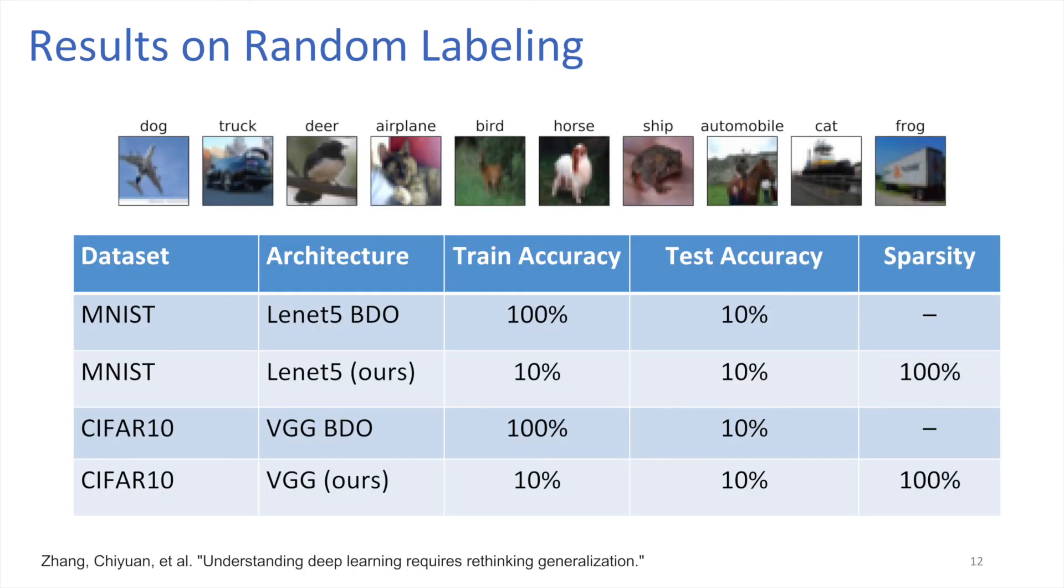Finally, we've conducted the experiment with random label data. Conventional regularization techniques like binary dropout still lead to severe overfitting in this scenario. This experiment shows that our structured Bayesian pruning model can regularize well and produces an empty neural network for randomly labeled data.